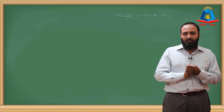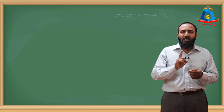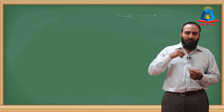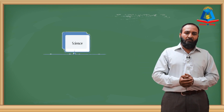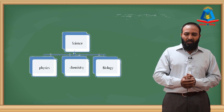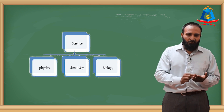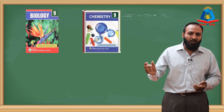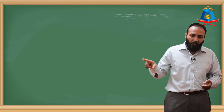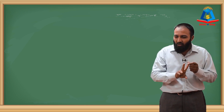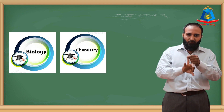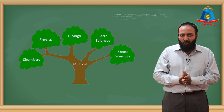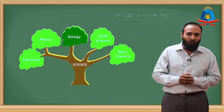As knowledge of science grew, it became difficult to study and teach all of science as one subject. So science had to be divided into different branches. In 8th grade you studied a science book which had chapters related to biology, chemistry, and physics. But when you moved to 9th grade, you saw that there was a separate book for biology, a separate one for chemistry, and a separate one for physics. So as we learned science, it was divided into different branches, and one of those branches is biology.